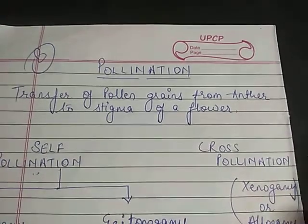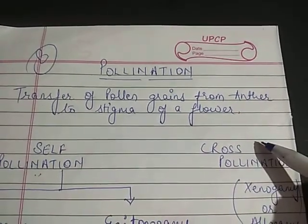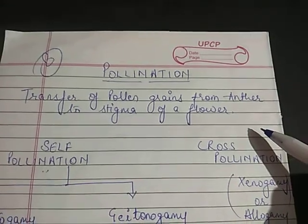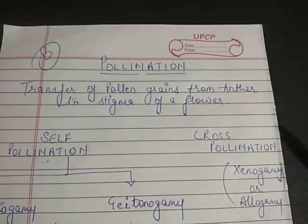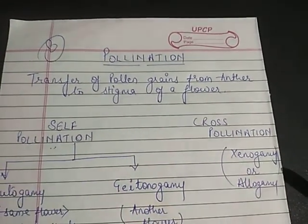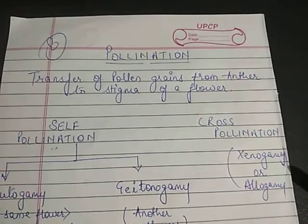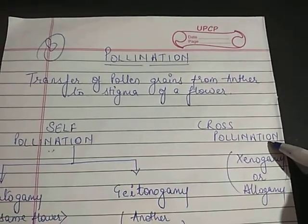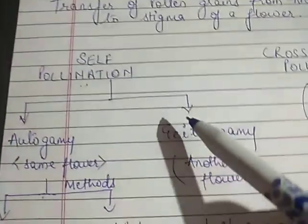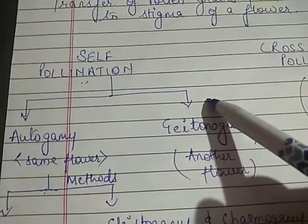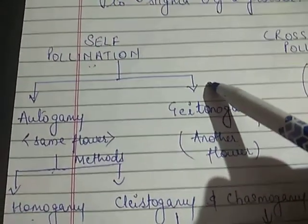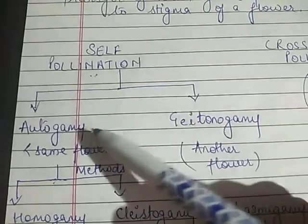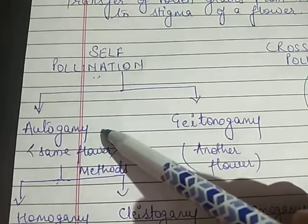Overall, pollination is the transfer of pollen grains from anther to stigma of a flower. Pollination is of two types: self-pollination and cross-pollination. Self-pollination, as the name indicates, means among itself only.